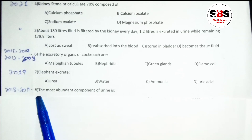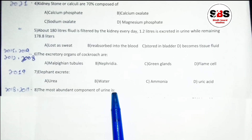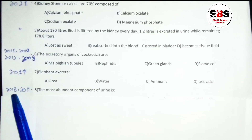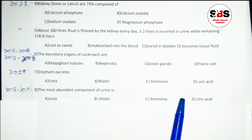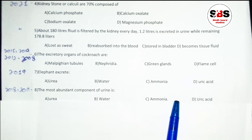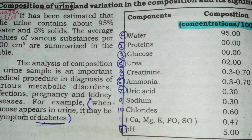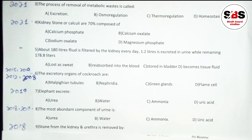Question number 8: the most abundant component of urine is what? This appeared in 2018 and 2011. Options are urea, water, ammonia, or uric acid. According to our textbook chart, urine is 95% water and 5% other components. Remember that in a healthy person's urine, protein and glucose are zero percent. The correct answer is water.